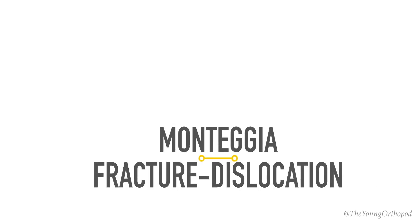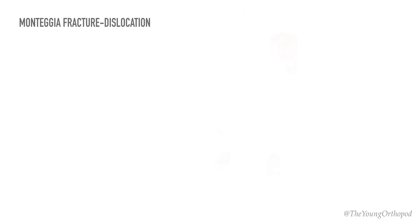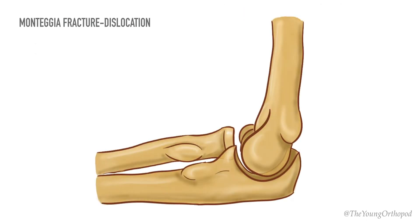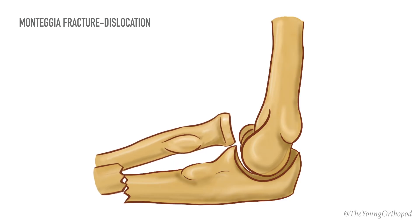The Monteggia fracture is named after Giovanni Battista Monteggia, an Italian surgeon who first described this fracture. It is a fracture of the proximal third of the shaft of the ulna, associated with radial head dislocation.